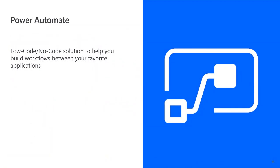I'll now hand it over to Chris, who's going to talk about Power Automate. Thanks Rachel. Hi folks, I'm Chris Gardy, a program manager on the Power Automate team focusing on F&O scenarios — specifically workflow and alerts within Finance and Operations. Power Automate is the low-code, no-code solution that enables you to build workflows between your favorite apps. It leverages over 300 connectors to provide event-based triggers that can start flows and actions that can be called from those flows.